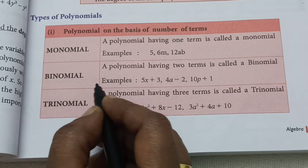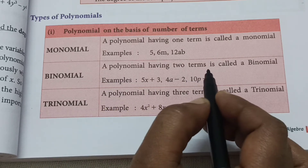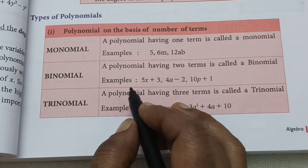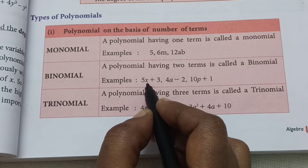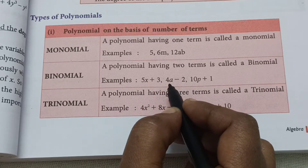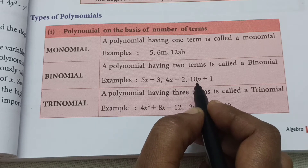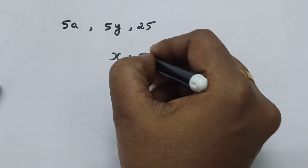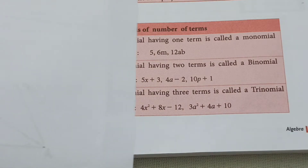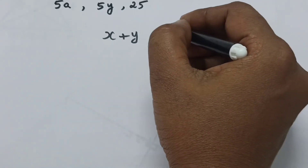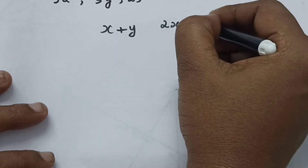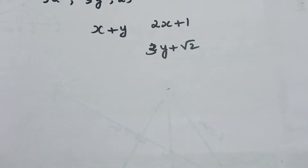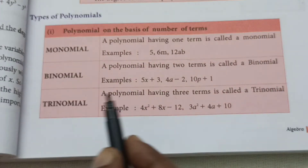The second type is a binomial. A polynomial having two terms is called a binomial. For example: 5X plus 3 — here 5X is one term and 3 is another term. Other examples are 4A minus 2, and 10P plus 1. Here 2X plus 1 has two terms, so it is called a binomial.